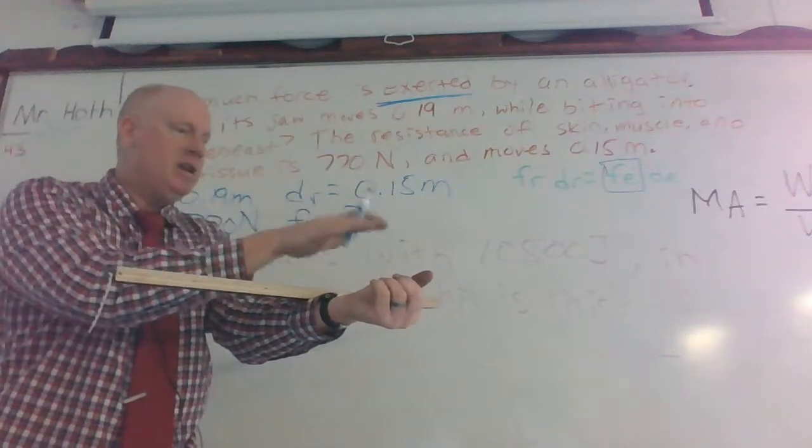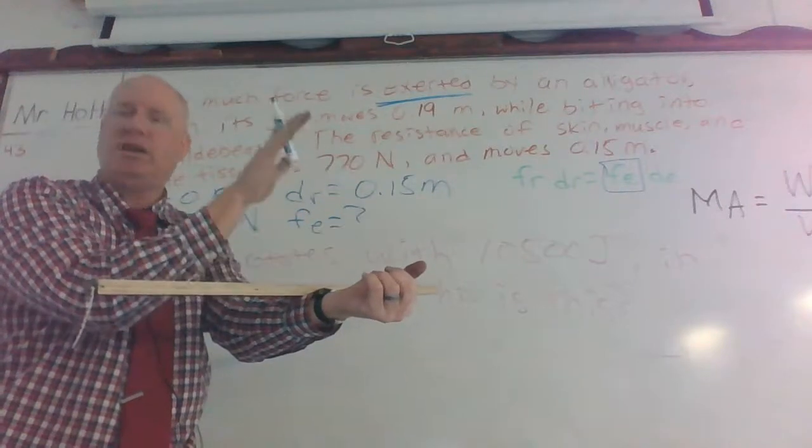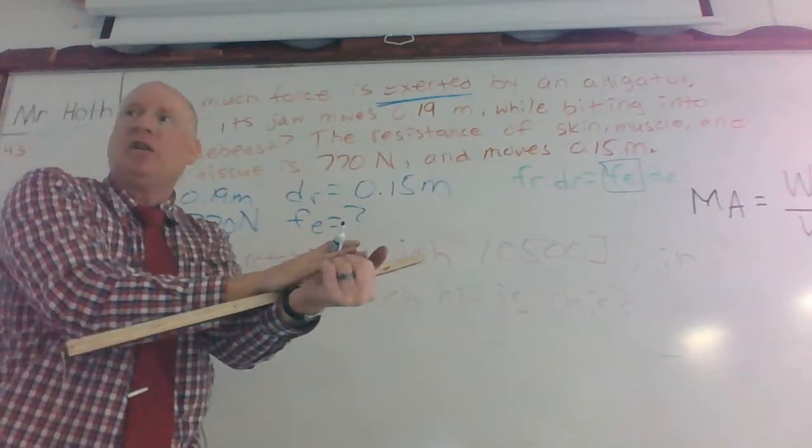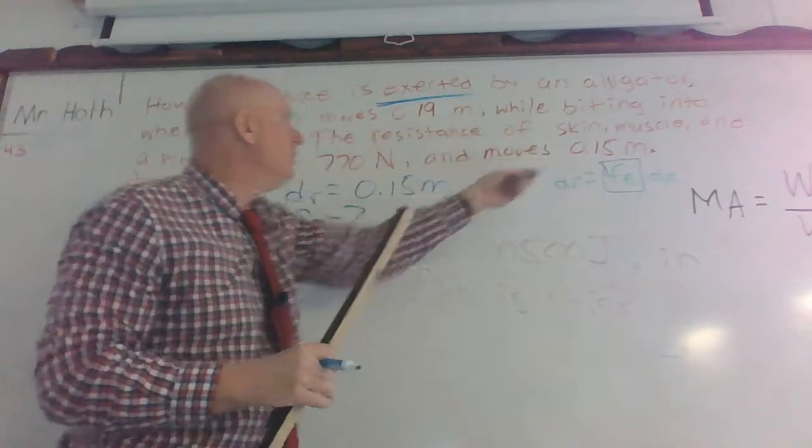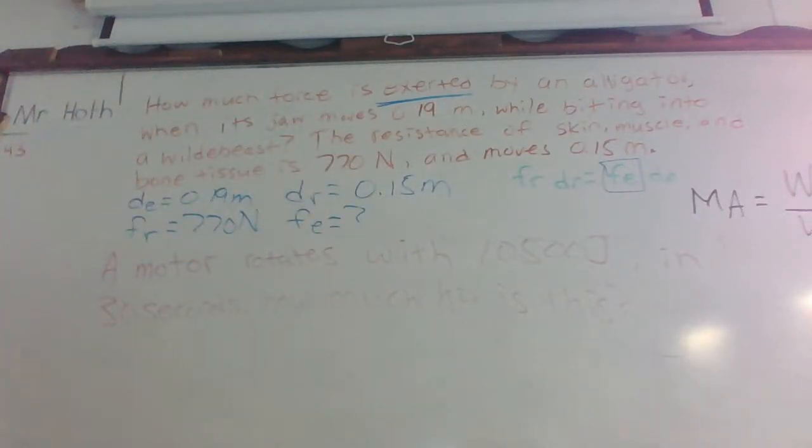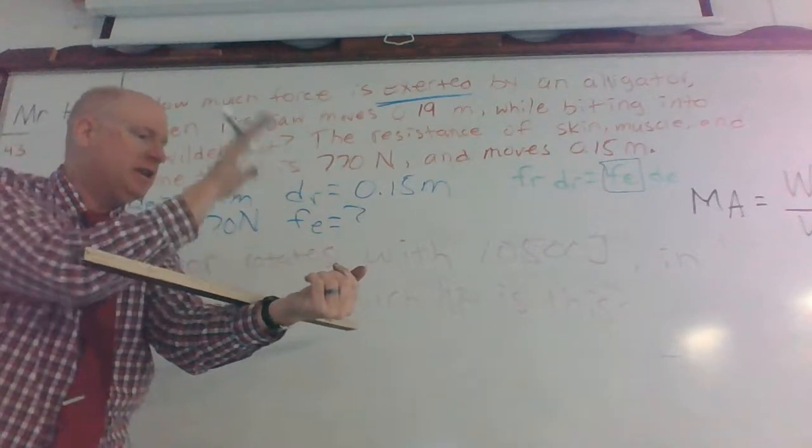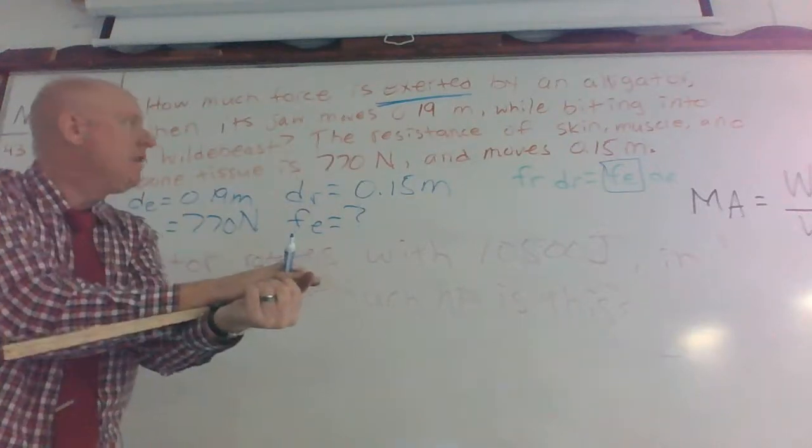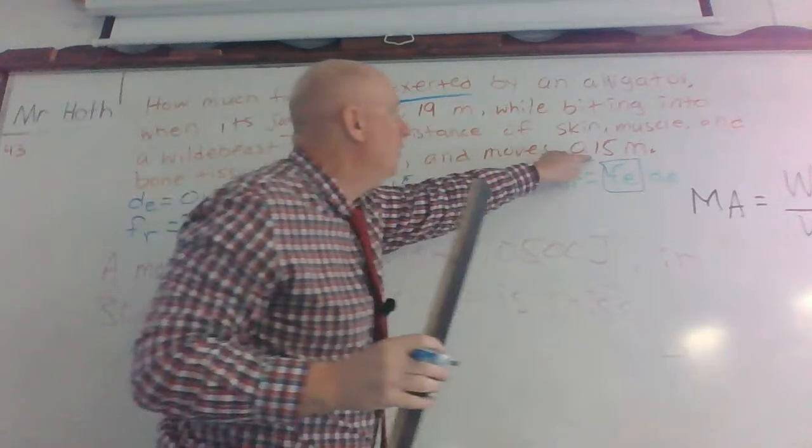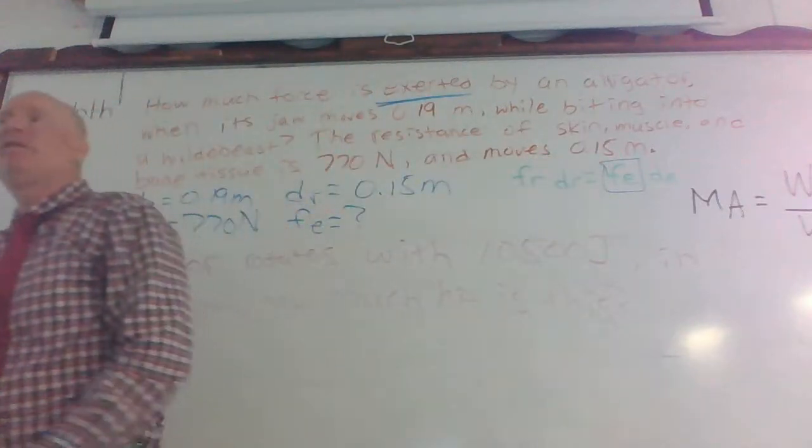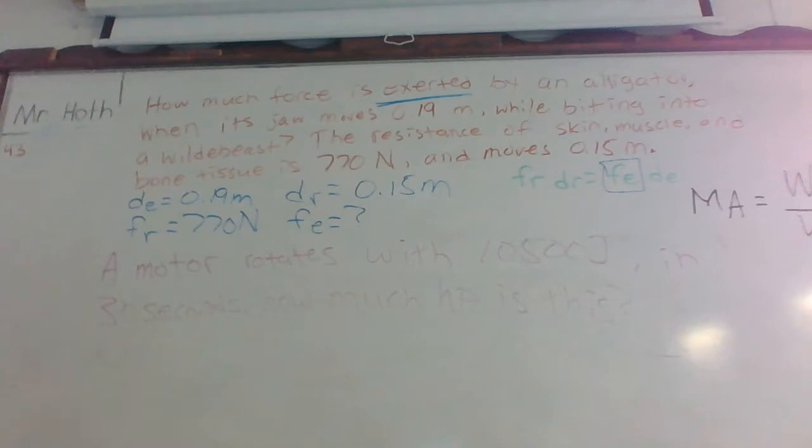So as it's clamping down, see if I can get this to balance. Okay. It's not meeting any resistance as that alligator is moving its jaw. But once it hits here, it's going to meet that resistance from the skin, muscle, and bone tissue. So that's why when it moves this far, the 0.19 again, it's not meeting any resistance. But then when it clamps down, now it's meeting this 0.15 meters. And this is going to be one of those things you're going to get better at the more exposure that you have to it.